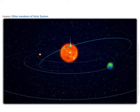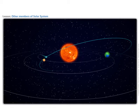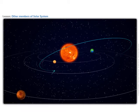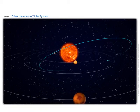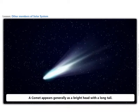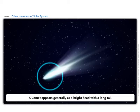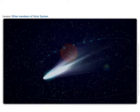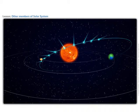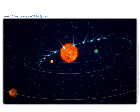They revolve around the Sun in highly elliptical orbits. However, the period of revolution around the Sun is usually very long. A comet appears generally as a bright head with a long tail. The length of the tail grows in size as it approaches the Sun. The tail of a comet is always directed away from the Sun.